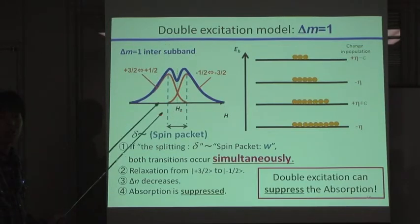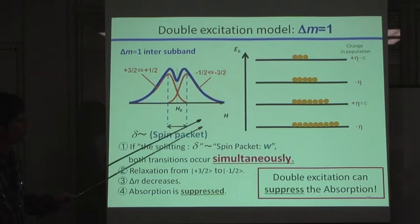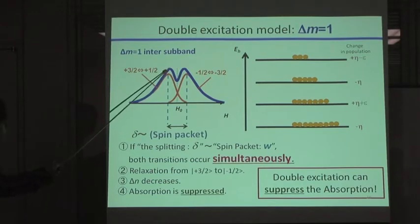Here, you can see the schematic spectrum of the EPR line of delta M equal to 1 inter-subband transition. This blue line indicates the integrated form of the absorption, which is composed of two specific resonances, this one and this one. And they are split by internal small strain, the width of delta, like this.